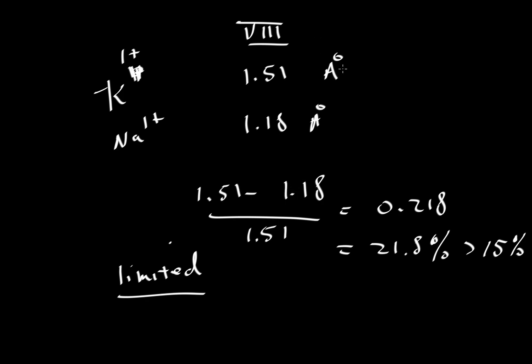Notice, by the way, that the only thing that matters here is the charge and the coordination number. There's nothing specific to the minerals that we are choosing. If we have any kind of mineral, be it a feldspar or a feldspathoid or anything else, if we have eight-fold coordination, then this kind of analysis applies. Same thing for our comparison of magnesium and iron.